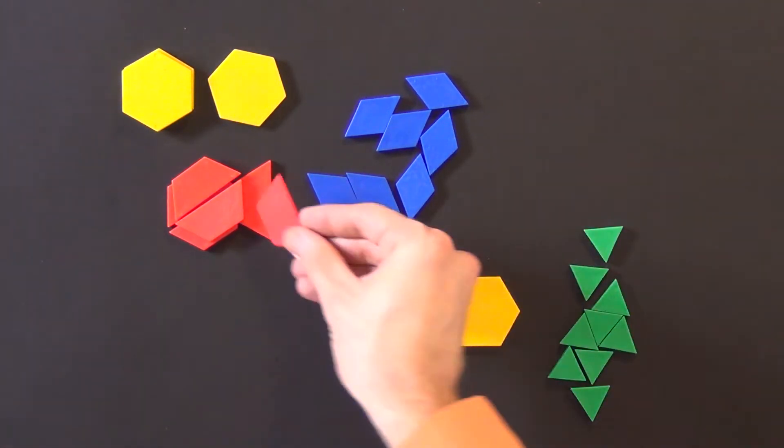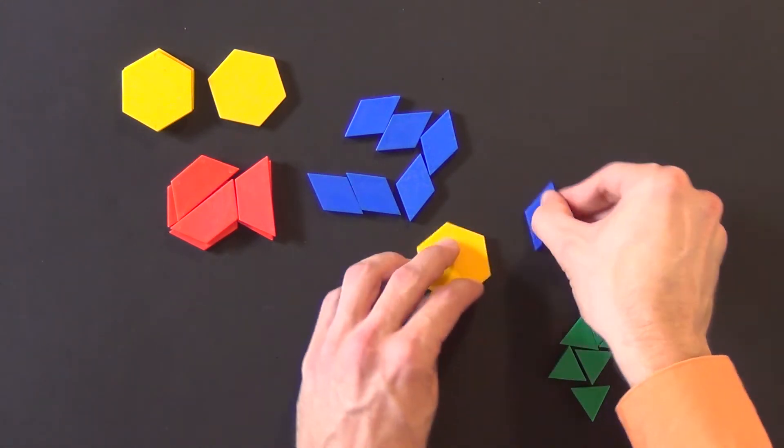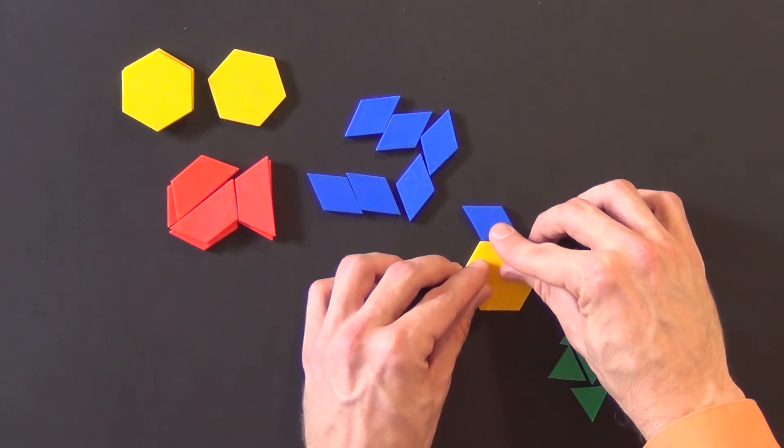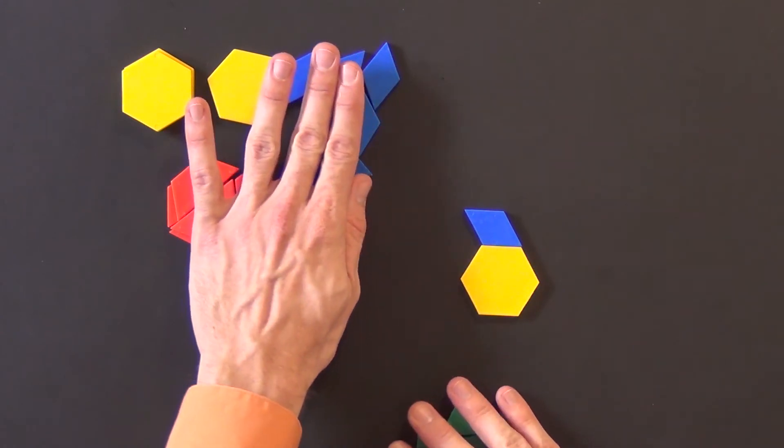So taking that off, let me put, I'll turn it around here, there we go, a blue rhombus. So if I say that the yellow hexagon together with the blue rhombus represents one whole...